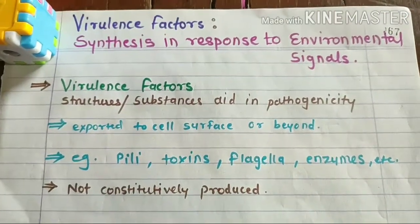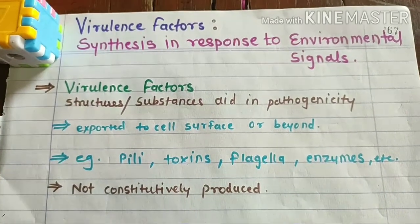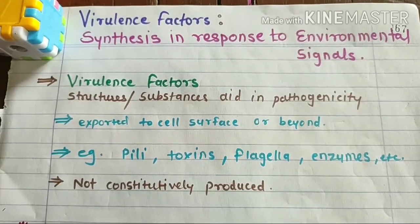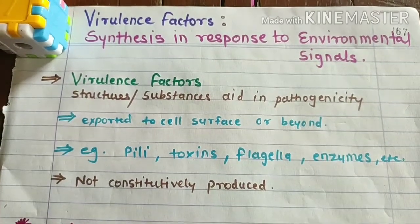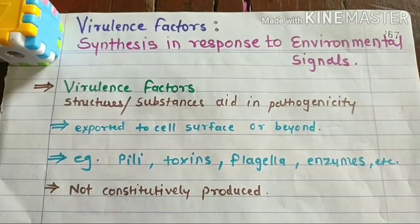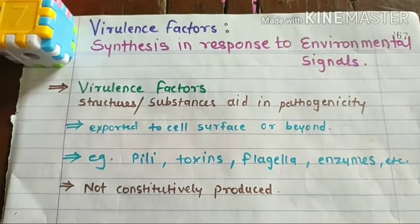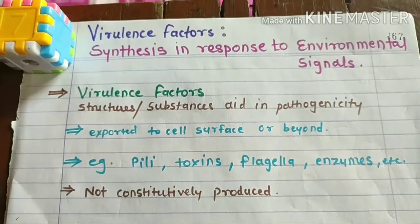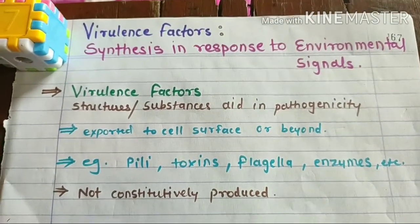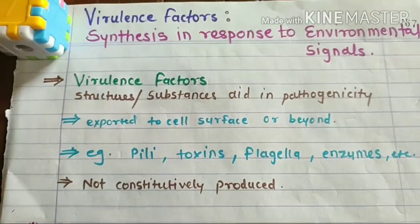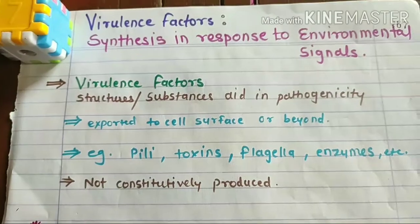Welcome everyone. In this video, we will learn about regulatory systems that transduce the environmental signals to the cell, resulting in synthesis of virulence factors. We will be studying when the virulence factor is produced — so it is in response to environmental signals. We will see what these different types of environmental signals are, how synthesis is occurring, and how it is regulated.